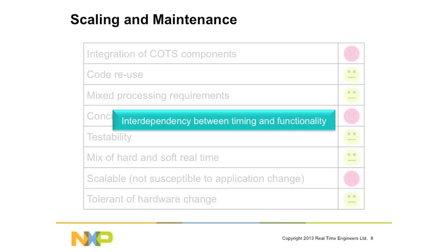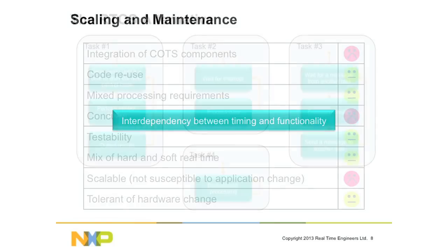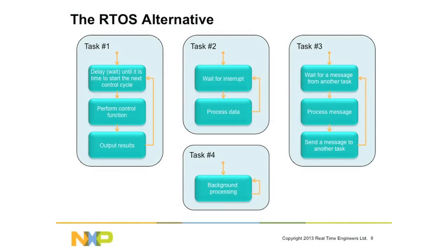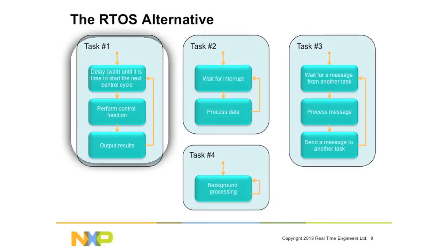The problem can be summed up by saying there's a big interdependency between what your application is trying to do functionally and how it is running — the timing of your application. What we want to do is break that to make our application much more maintainable. If we break our application up into separate tasks, different threads of execution, then we might have a structure like this.